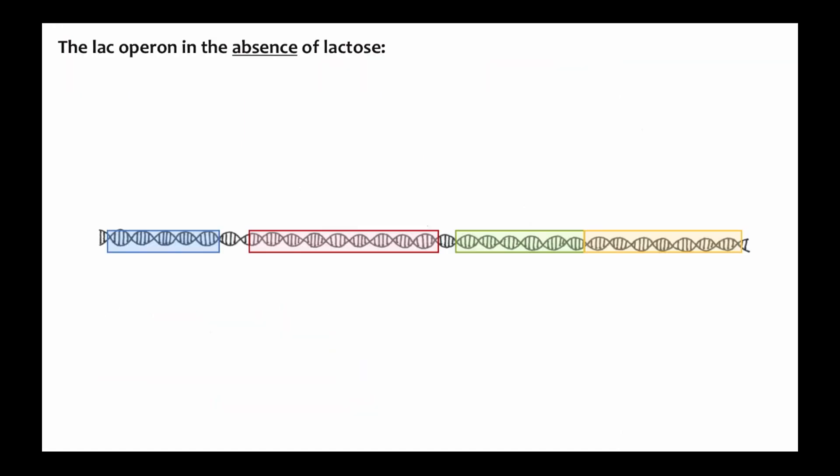The lac operon is a group of genes in a bacteria that allows the bacteria to use the sugar lactose as an energy source. There are several genes in a control region associated with the operon. For simplicity, we are only going to talk about one of the control regions and three of the genes.